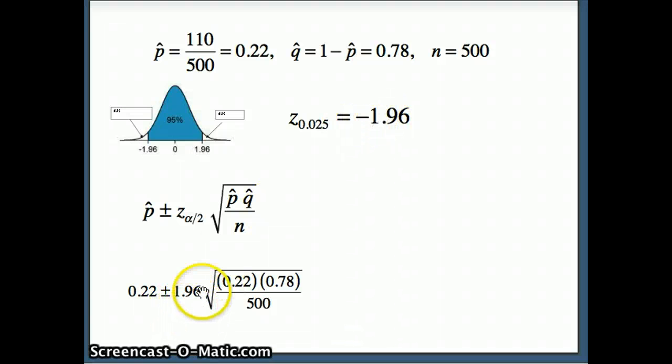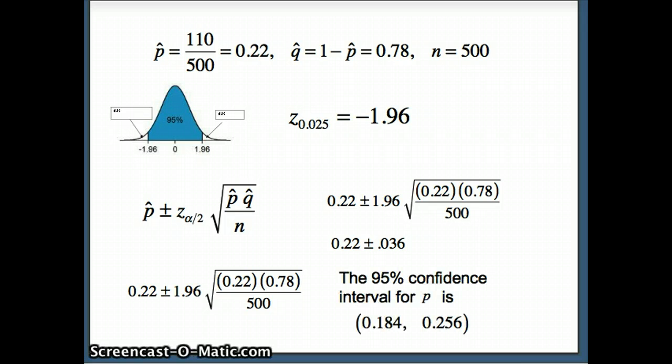And then that's going to give us 0.22 plus or minus 0.036. So we're going to conclude here that the 95 percent confidence interval for p is from 0.184 to 0.256, and we're going to want to check this on Minitab.